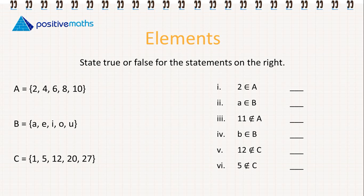Let's state true or false for the following statements. We have the set A = {2, 4, 6, 8, 10}, set B = {A, E, I, O, U}, and set C = {1, 5, 12, 20, 27}. Part 1: 2 is an element of A — true. A is an element of B — true. 11 is not an element of A — true. B is an element of B — false. 12 is not an element of C — false. And 5 is not an element of C — false.